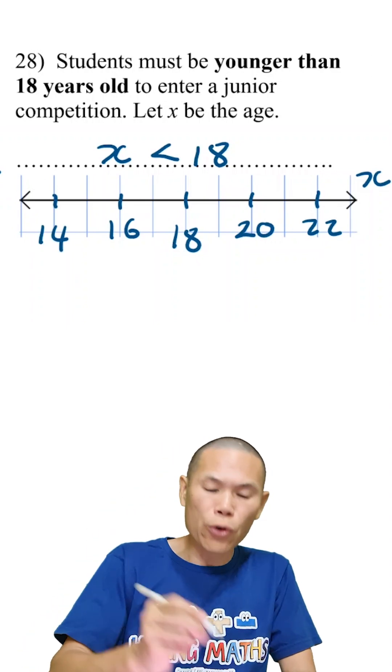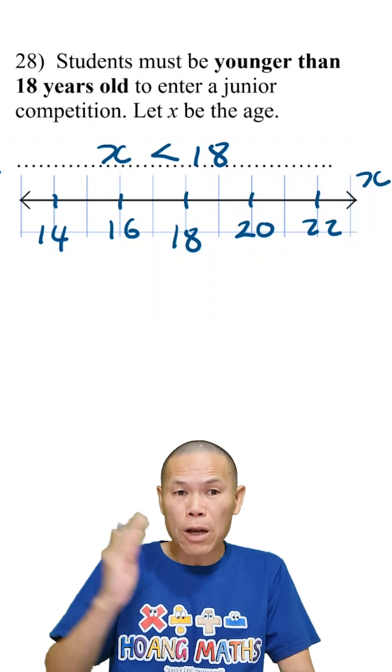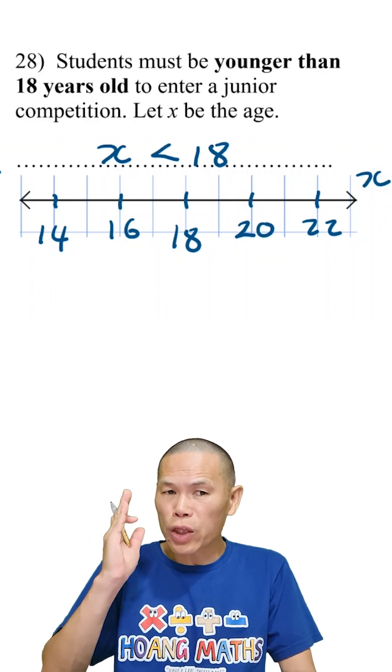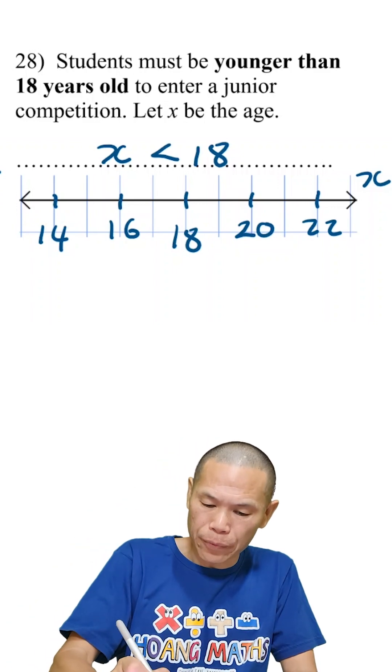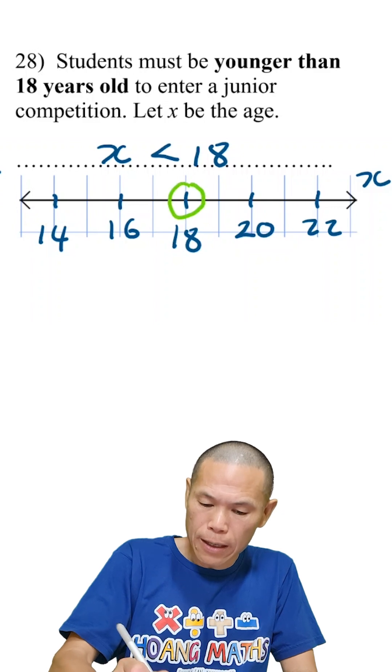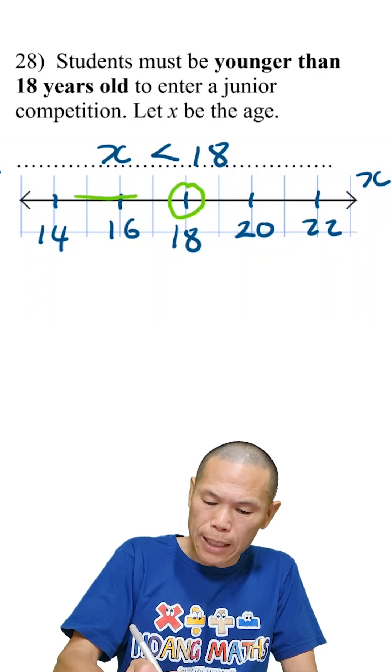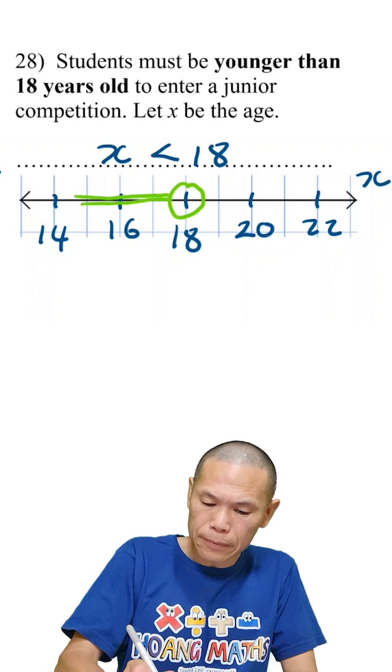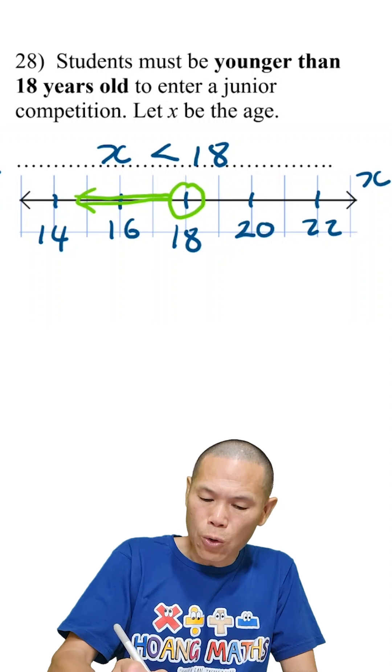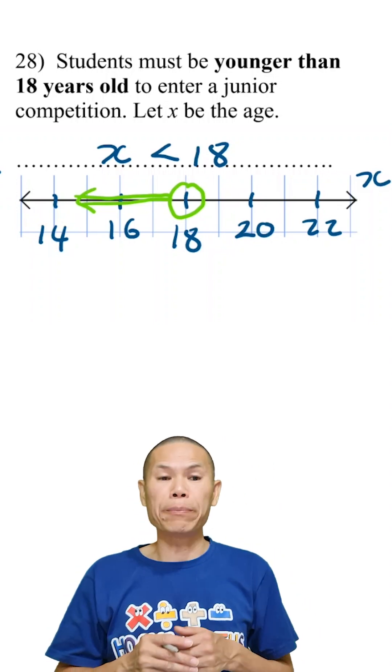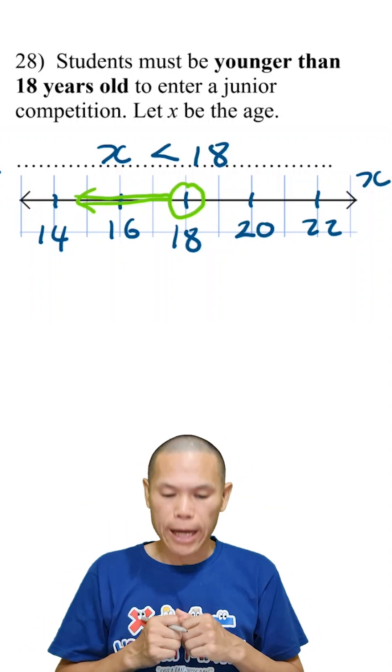Less than 18, so all the numbers that are below 18, in other words on the left-hand side of 18. Let me circle 18 here. All these numbers are less than 18, and of course we leave the circle empty because not including 18.